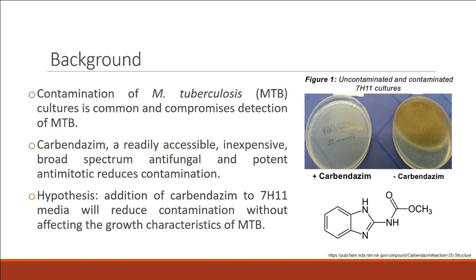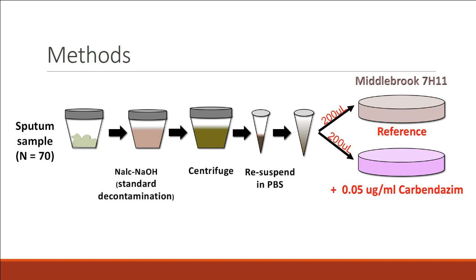The hypothesis is that addition of carbendazim to 7H11 media will reduce contamination without affecting the growth characteristics of mycobacterium tuberculosis. For methods, we evaluated 70 sputum samples from patients with pulmonary TB in a clinical trial in Lima. All samples were processed with NALC standard decontamination. Two aliquots of 200 microliters were taken: one inoculated in a 7H11 plate without carbendazim as reference, and the other inoculated in a plate with carbendazim. Both plates contained amphotericin B.